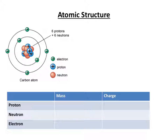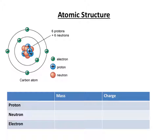Welcome to this video on atomic structure, which is suitable for use with the IGCSE chemistry course. You'll hopefully know already that atoms are made up of three sub-atomic particles — sub-atomic meaning smaller than the atom. So there are three types of particle: we've got protons, neutrons, and electrons.